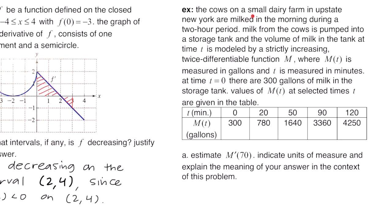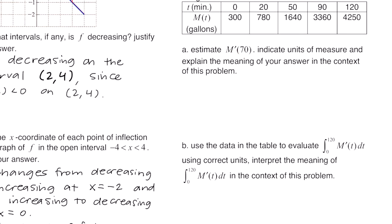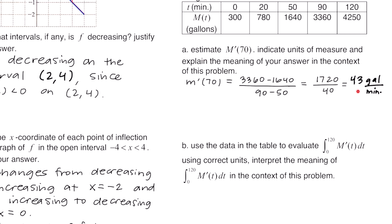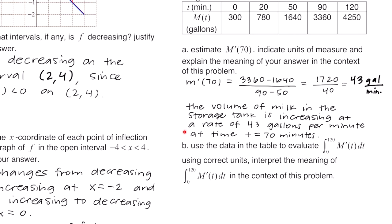This example says the cows on a small dairy farm in upstate New York are milked during a 2-hour period. Milk is pumped into a storage tank, and the volume of milk at time t is modeled by a strictly increasing, twice differentiable function m, where m of t is in gallons and t is in minutes. At t equals 0, there are 300 gallons in the tank. To find m prime of 70, we look at the chart and use the values at t equals 50 and t equals 90, estimating m prime of 70 as 43 gallons per minute. This means the volume of milk is increasing at a rate of 43 gallons per minute at t equals 70 minutes.